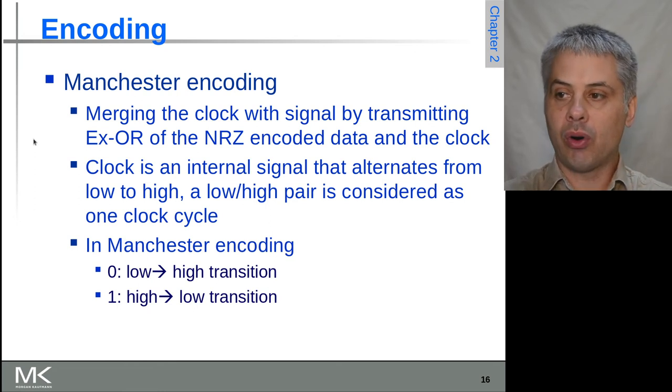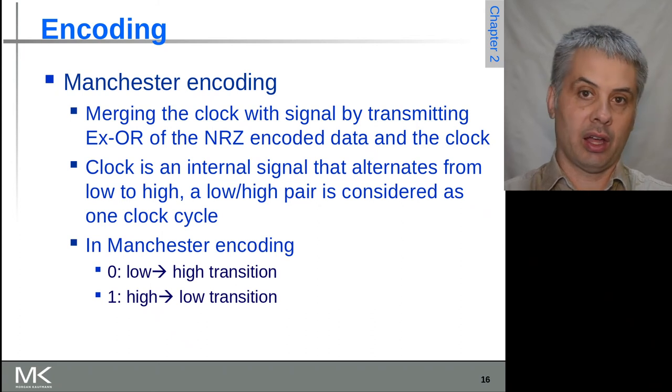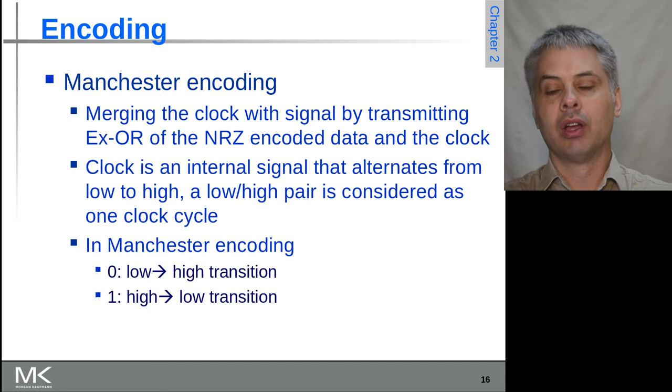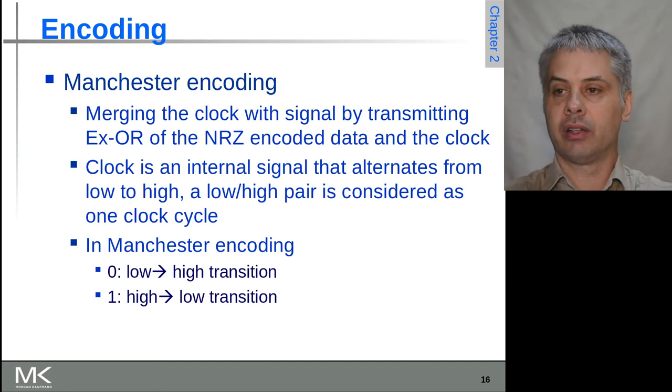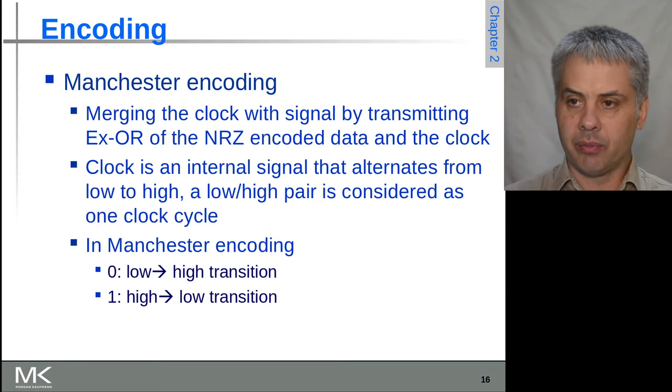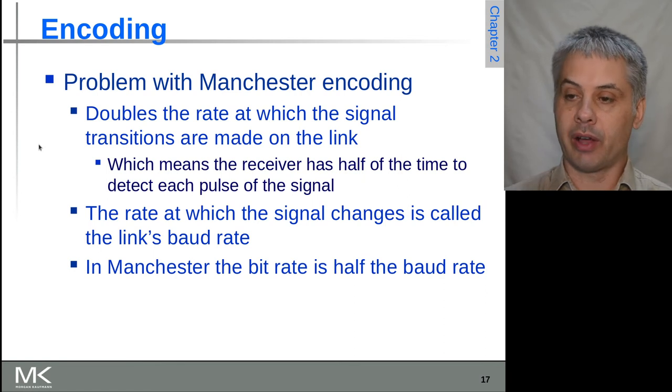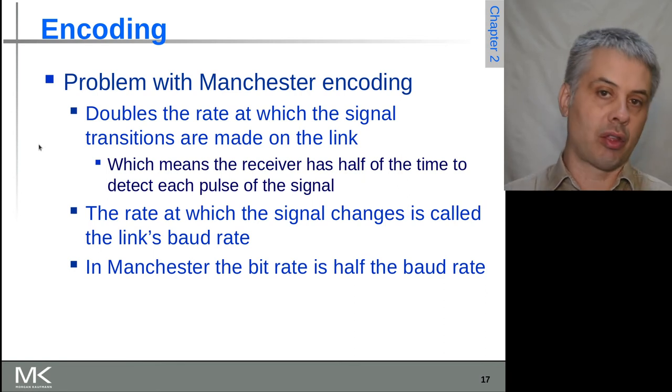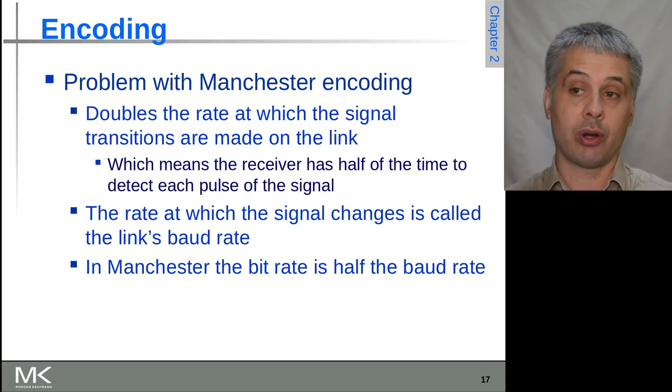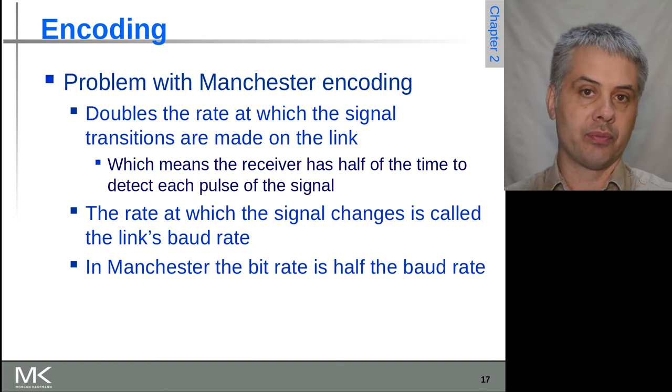Then Manchester encoding looked to solve this problem. It does an exclusive OR of the NRZ encoded data and the clock. Now the clock is effectively a signal overlaid over the top of the data, but this effectively halves the transmission rate of data you can get, but in return for having the clock recovery. Again, this was an issue not just for communications but also on floppy disks and early hard drives as well. This really reduced the rate of data or the amount of storage that you could get on recorded media.